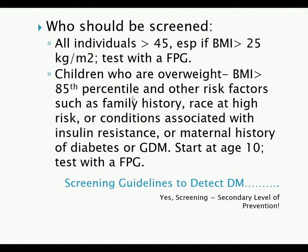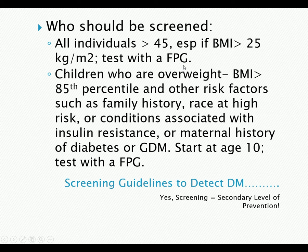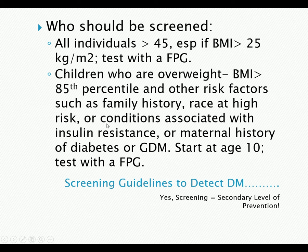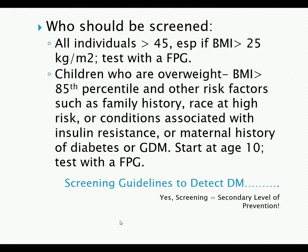Who should be screened? All individuals greater than 45 years of age, especially if their BMI is greater than 25, should have a fasting plasma glucose test. Children who are overweight with a BMI greater than the 85th percentile and have other risk factors — like family members with type two, high-risk race/ethnicity, conditions associated with insulin resistance, or a mother who had gestational diabetes — should start screening at age 10. These are our secondary level of prevention screening guidelines.